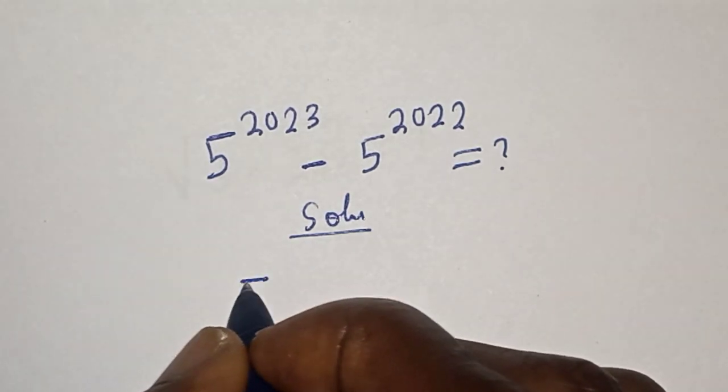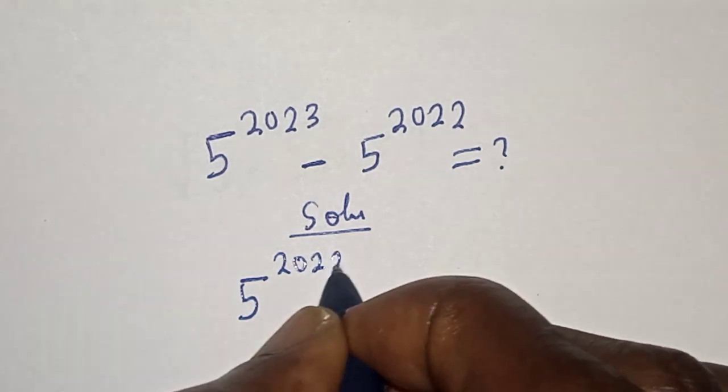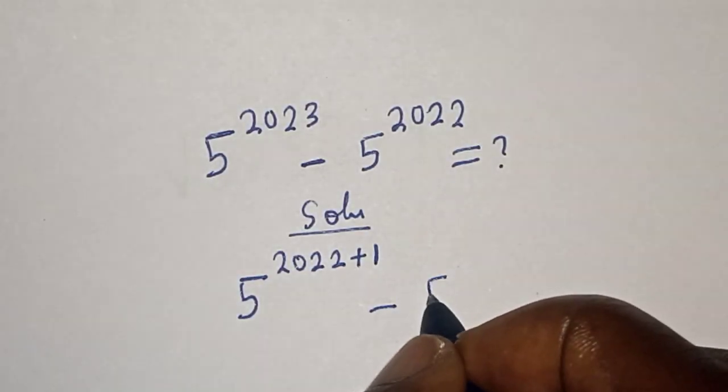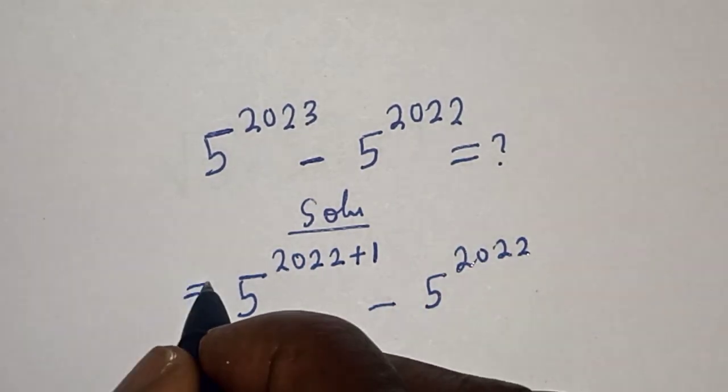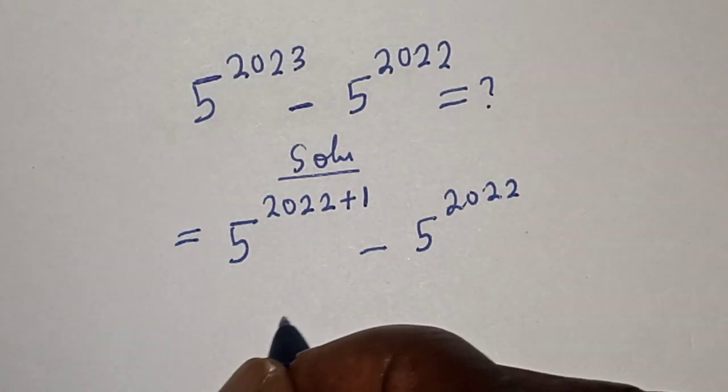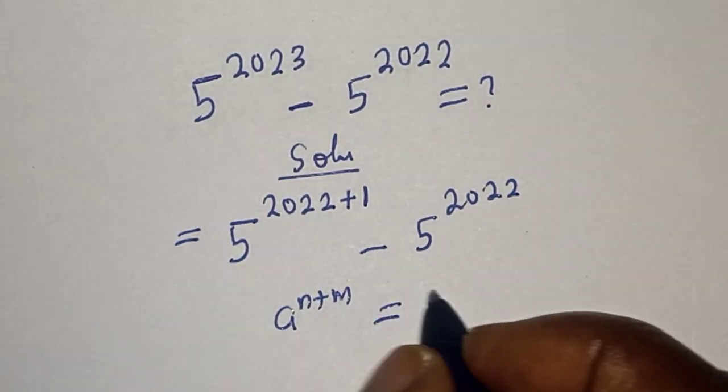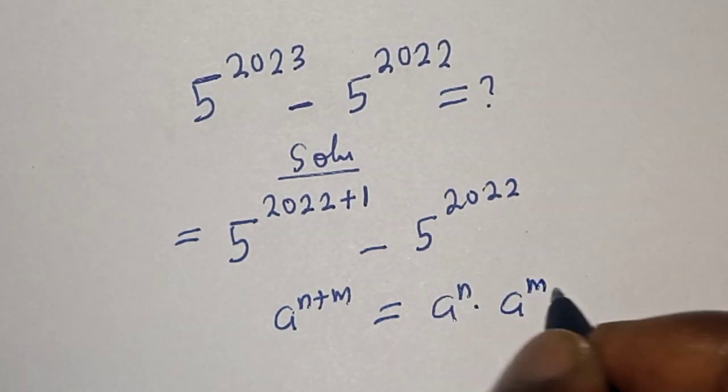5 raised to power 2023 can be written as 5 raised to power 2022 plus 1, minus 5 raised to power 2022. Then take note of this rule: if you have a raised to power n plus m, it is equal to a raised to power n multiplied by a raised to power m.